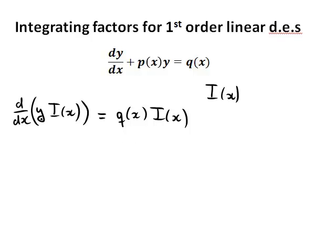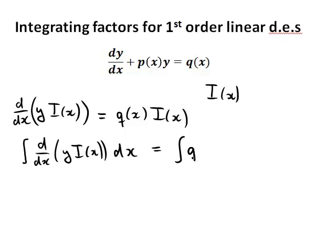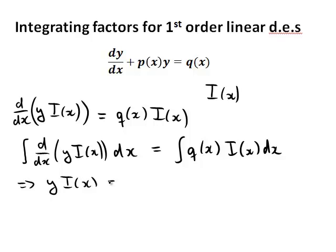This is the idea, because if we could somehow find i(x) that fulfills this equation, then we can solve for y easily. On the left-hand side, if we take the integral of d/dx of y·i(x) dx, and also on the right-hand side, the integral of q(x)·i(x) dx, then differentiation and integration cancel each other, and what's left on the left-hand side is y·i(x) equal to this integral.